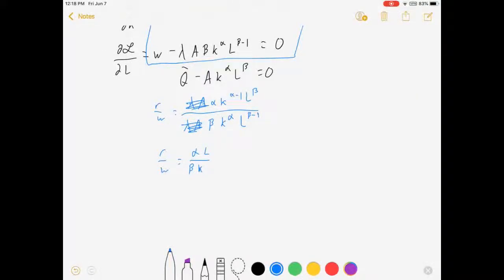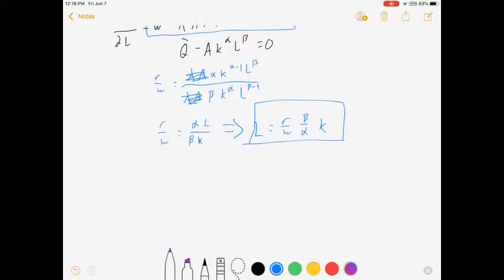R over W is equal to alpha L over beta K. Alright, hopefully you're doing okay so far. If not, rewind or something because I'm moving forward. From this I can solve for L as a function of K where L is equal to R over W times beta over alpha times K, and that ratio will always hold as long as I am minimizing my costs.